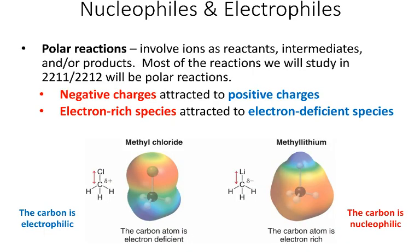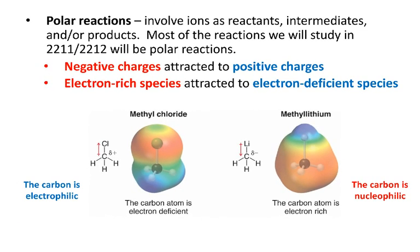Nucleophiles and electrophiles are relevant to a really important class of reactions called polar reactions. Polar reactions typically involve ions either as reactants, intermediates, or products. Most of the reactions that we're going to study in both Orgo-1 and Orgo-2 will be examples of polar reactions. Polar reactions are basically governed by the fact that negative charges are attracted to positive charges, or species that have lots of electrons are attracted to species that are deficient in electrons. We've got two examples of compounds that are electrophiles and nucleophiles below.